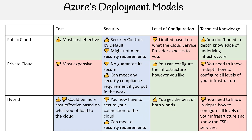We have the hybrid model. This could be more cost effective based on what you offload to the cloud, and also the cost of moving data back and forth. For security, you have more to secure, but some things are easier to secure on the cloud than in private — so you might have a boost in security. You're going to get the best of both worlds in terms of configuration. For technical knowledge, you need to know both the cloud and how to set things up on-premises, and that's the most work.